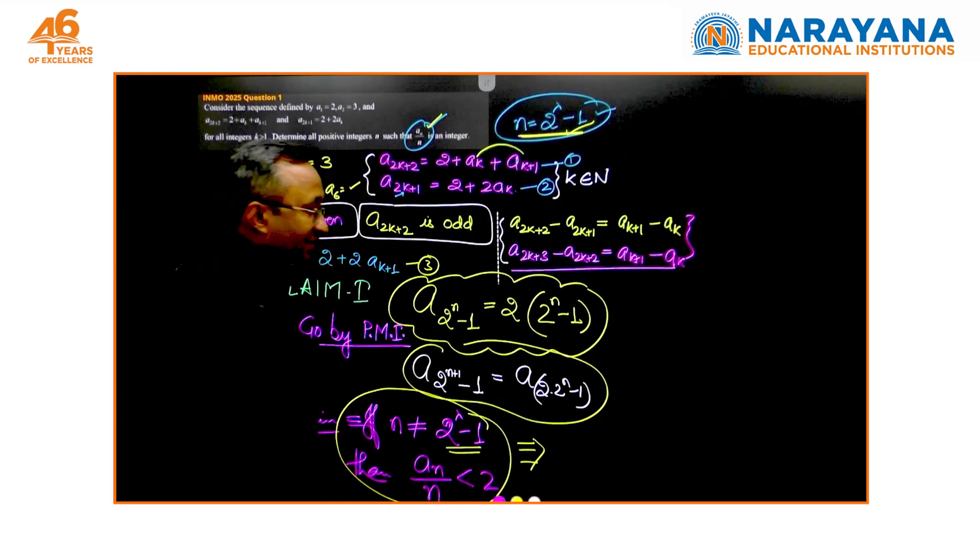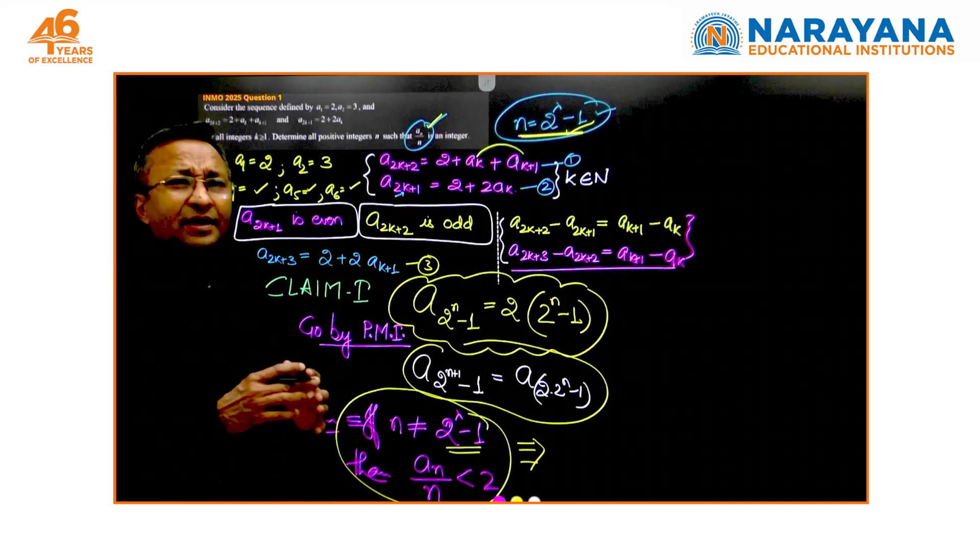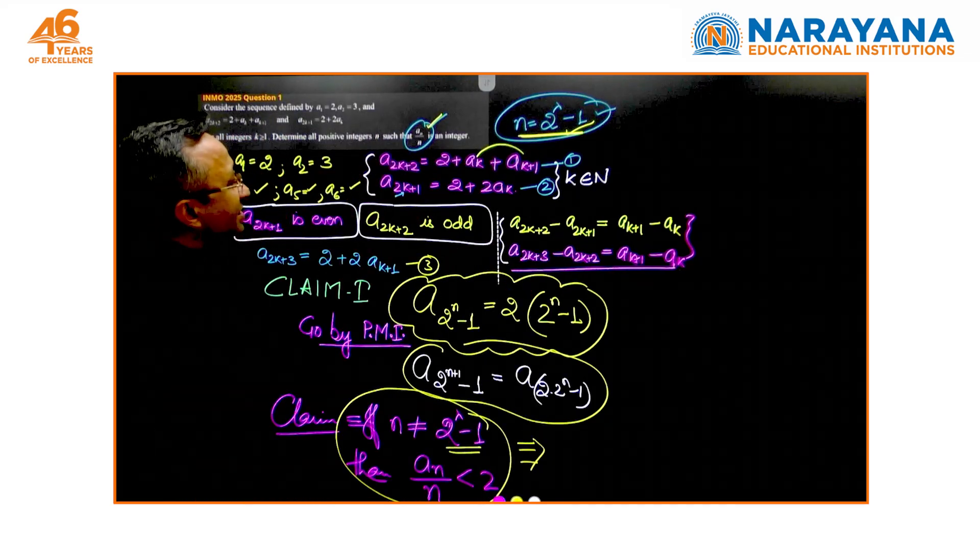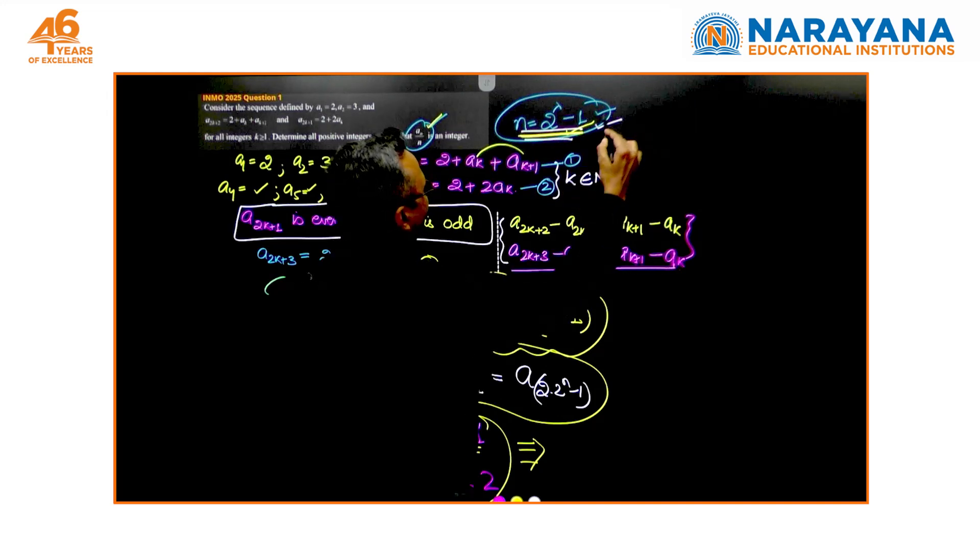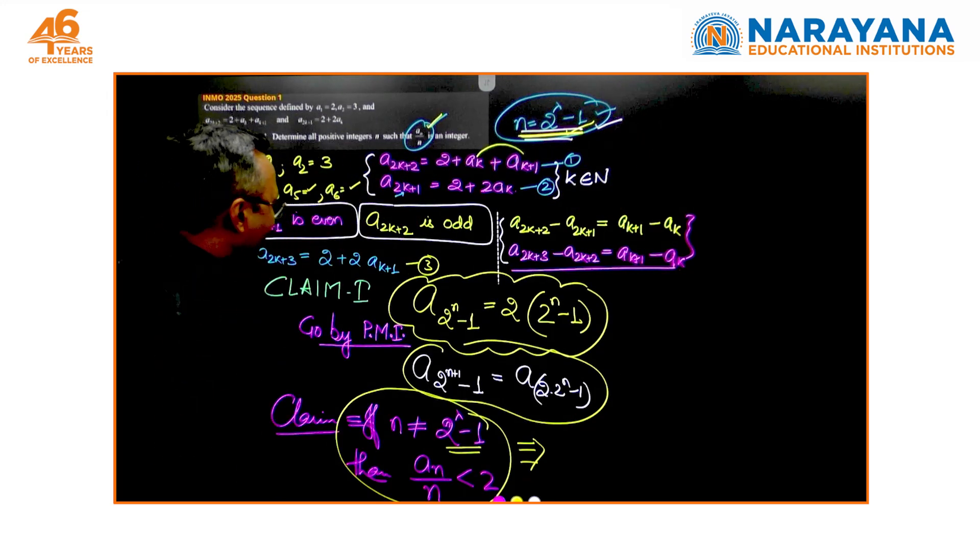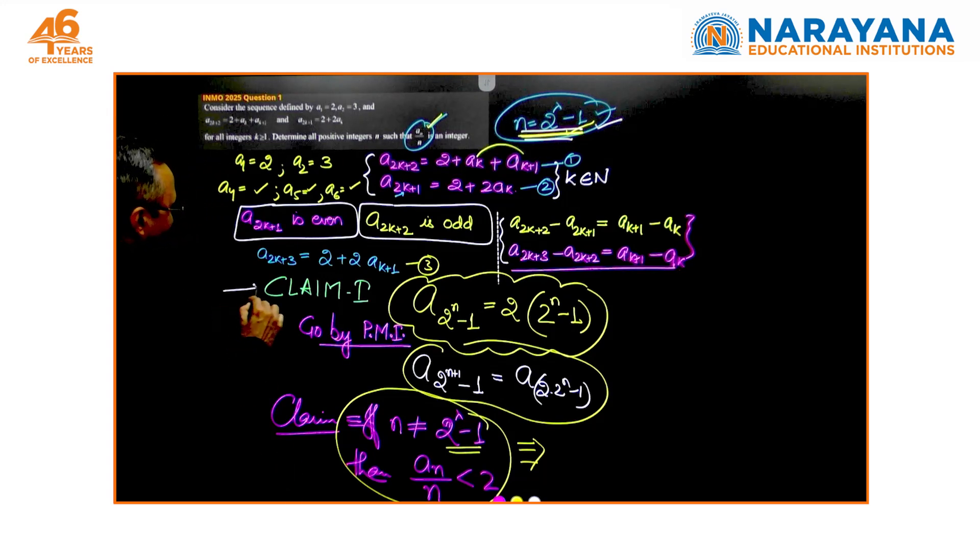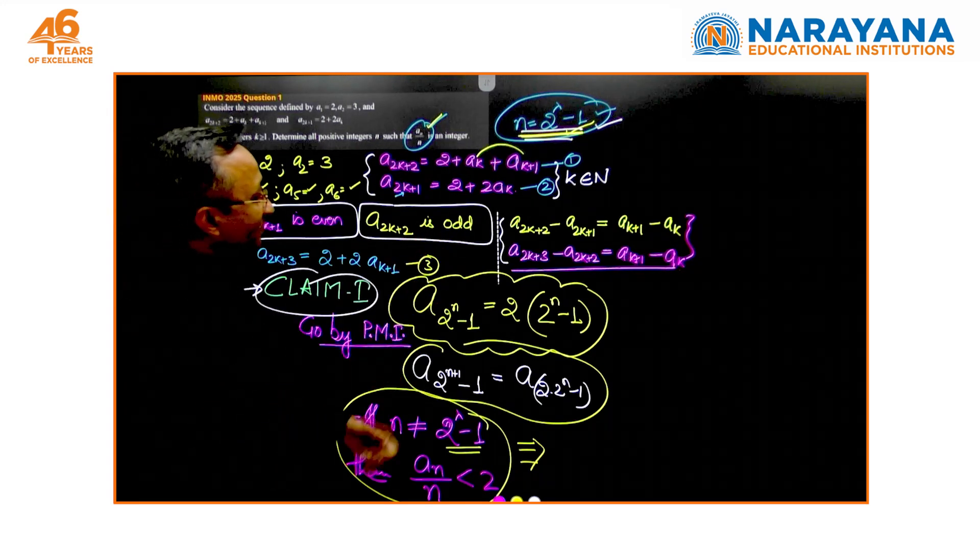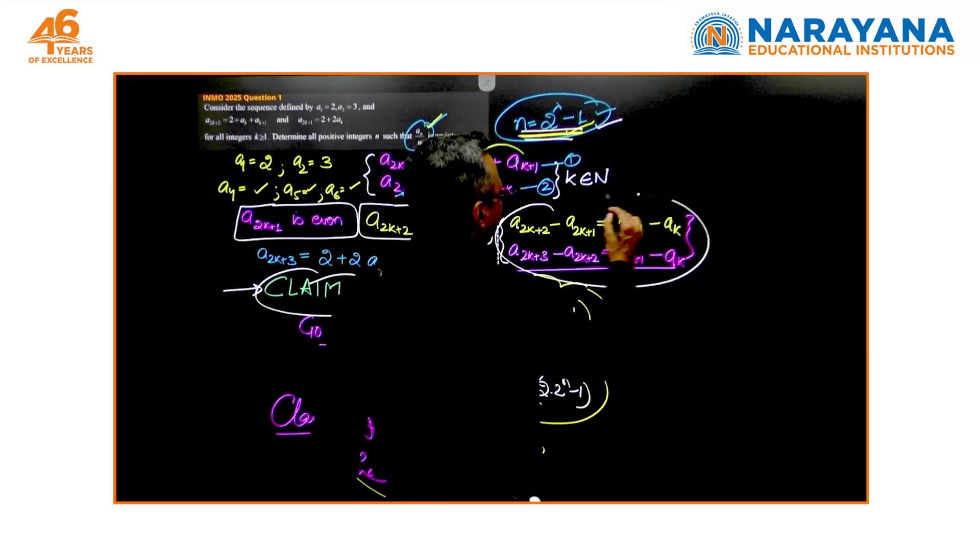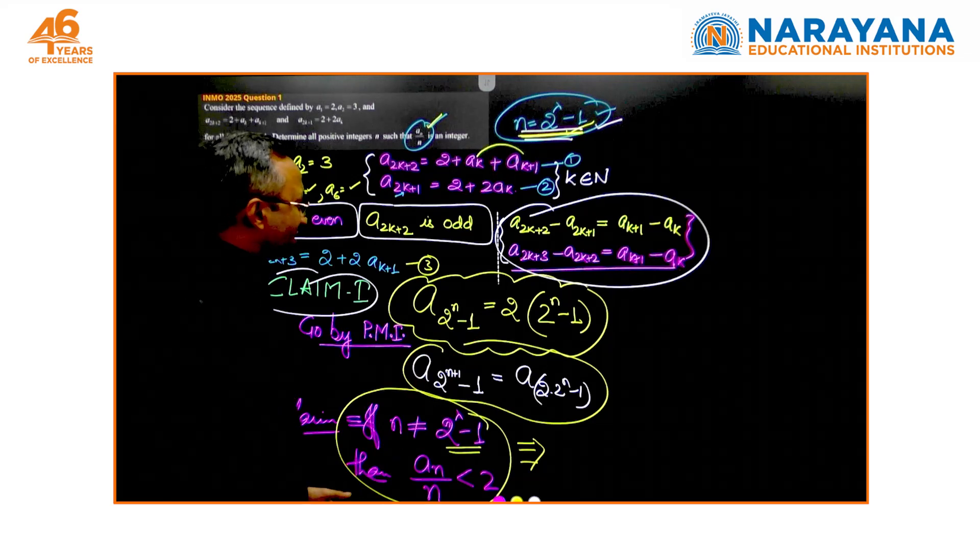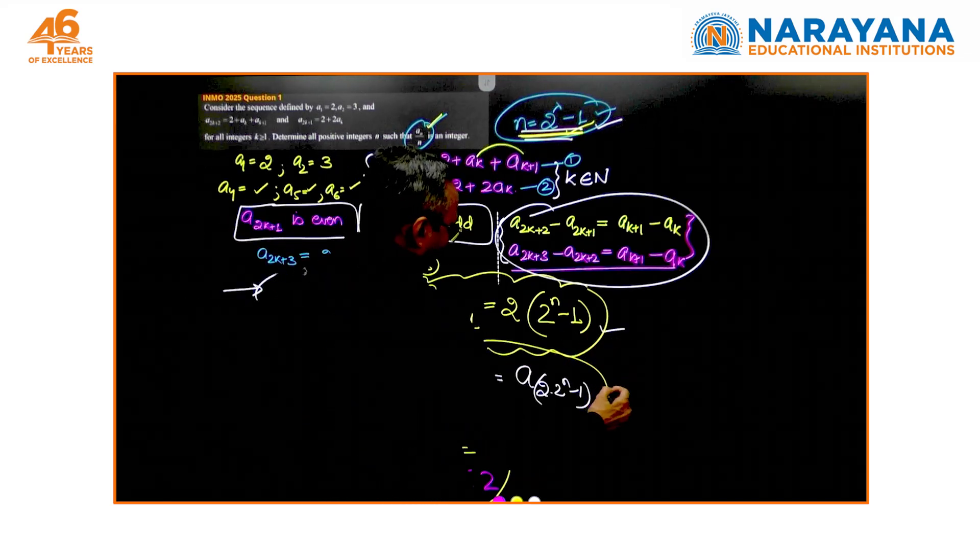If we go ahead by this, which I am sure you would be able to do because it is pure principle of mathematical induction, we are done because then we establish that a_n upon n is an integer for any n which is of the form 2^λ - 1. Many of the students have mentioned that they have written the series up to a large number of terms and have realized that this is going to work. Is this good? The answer is no. You have to have some logical reasoning behind this.